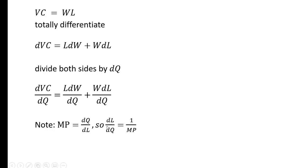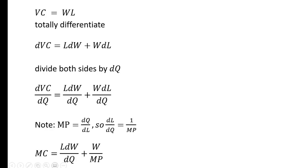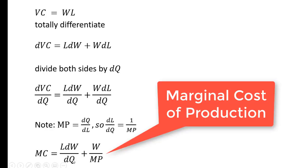We're going to make a couple of substitutions: substituting in for DL/DQ by putting in one divided by the marginal product, and recognizing that the left-hand side is nothing more than the marginal cost of production — the change in variable cost over the change in output, or the derivative of variable cost with respect to output. Making those substitutions we have the following expression.